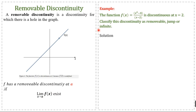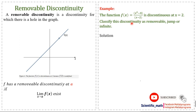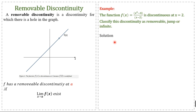Let's discuss an example related to removable discontinuity. The function f(x) = (x² - 4)/(x - 2) is discontinuous at x = 2. We have to classify the type of discontinuity — removable, jump, or infinite. Starting the solution: if we substitute x = 2 we get 0/0, which is an undefined form.